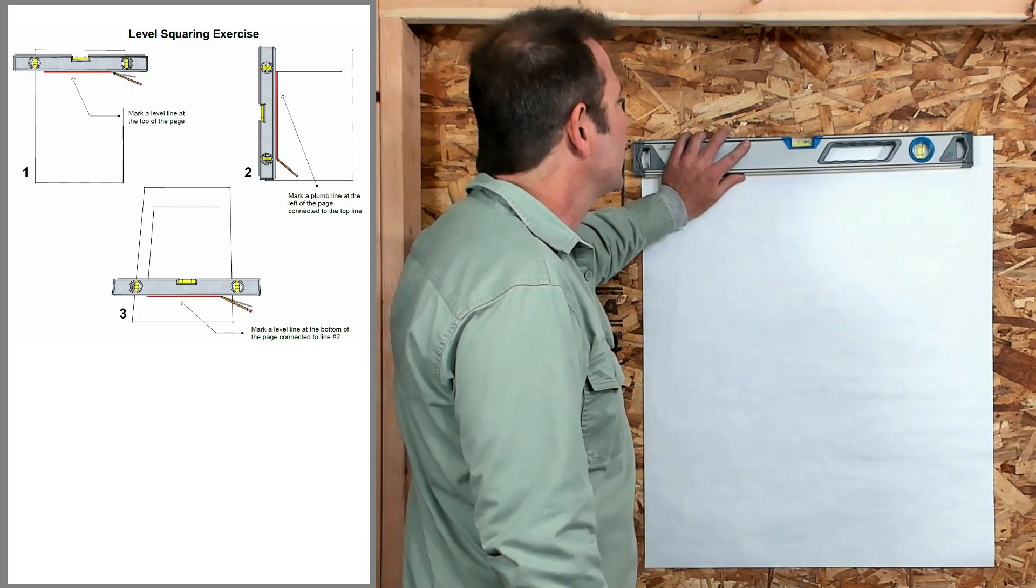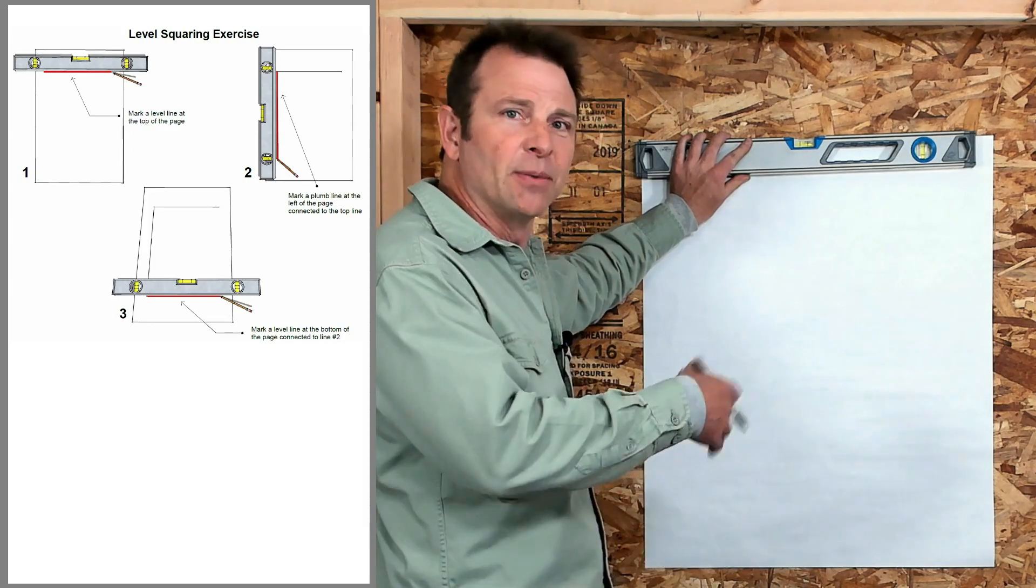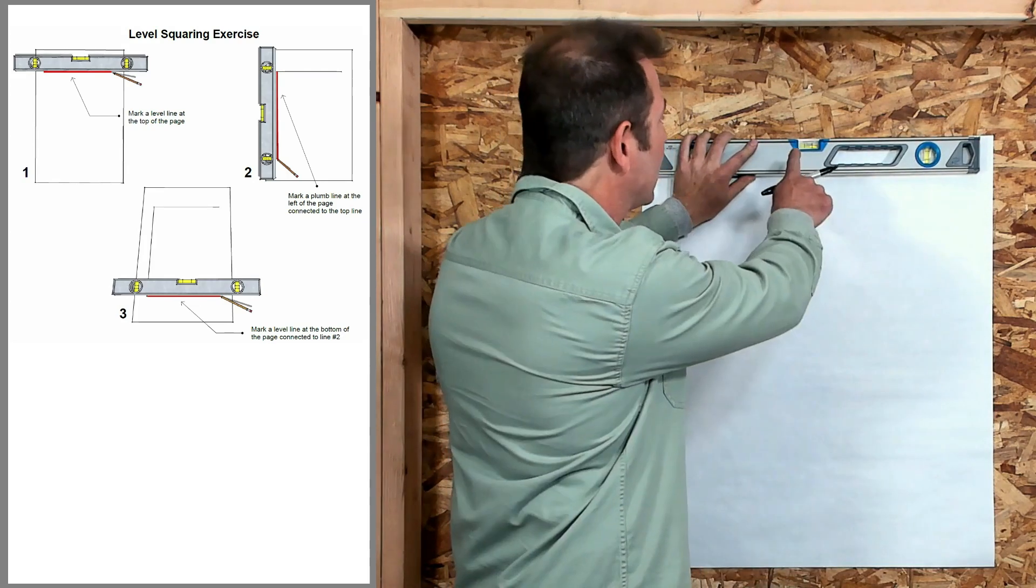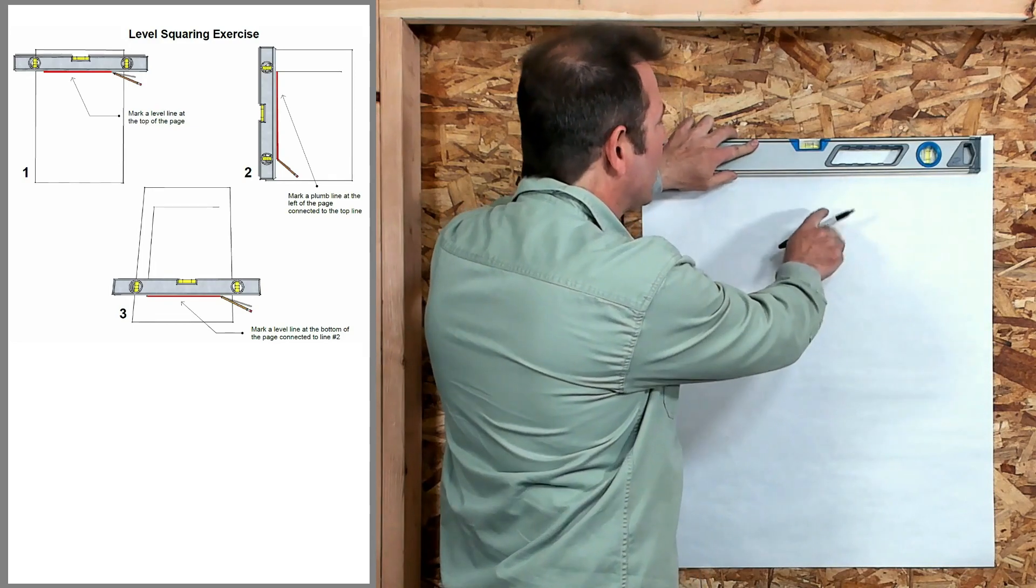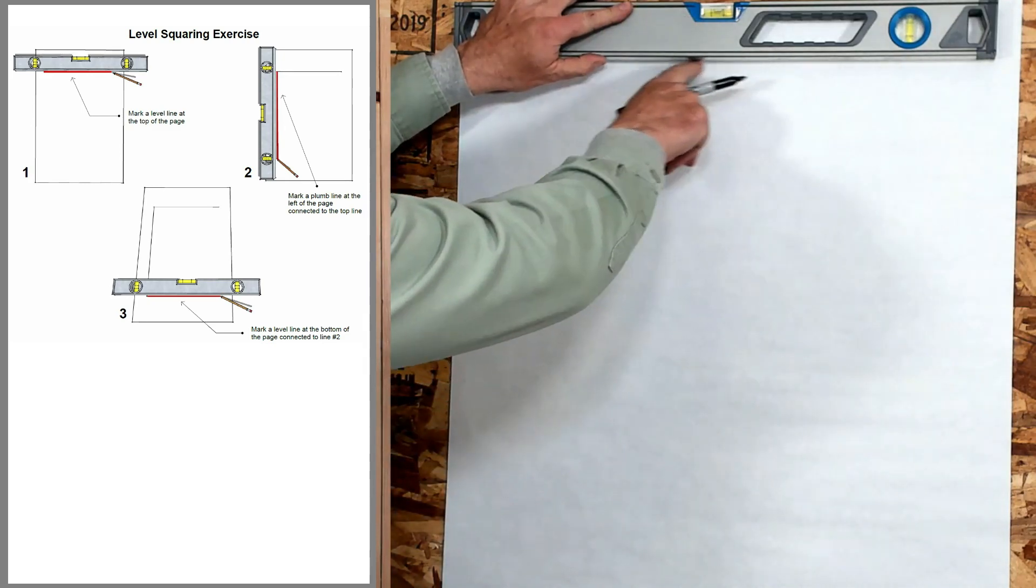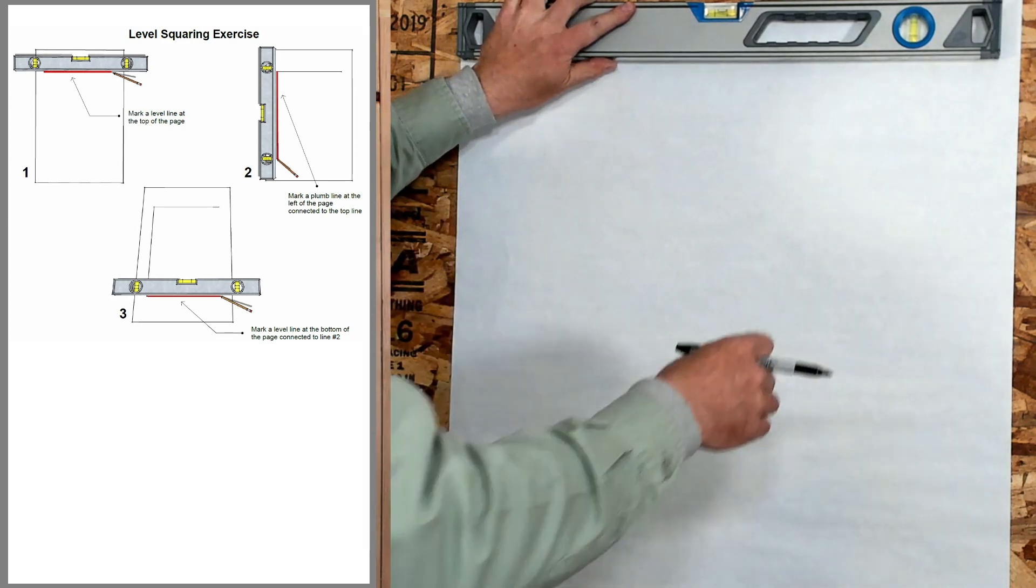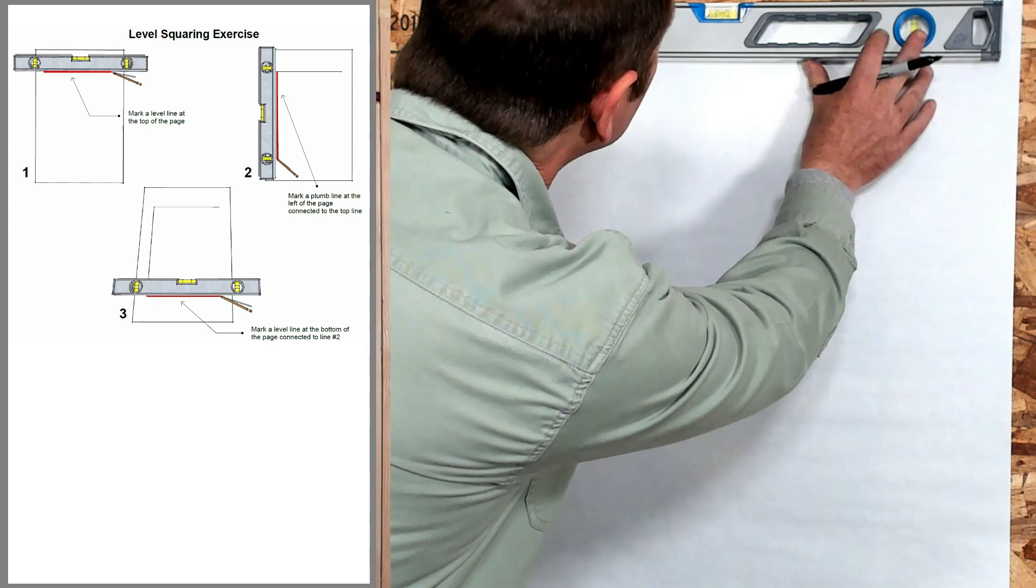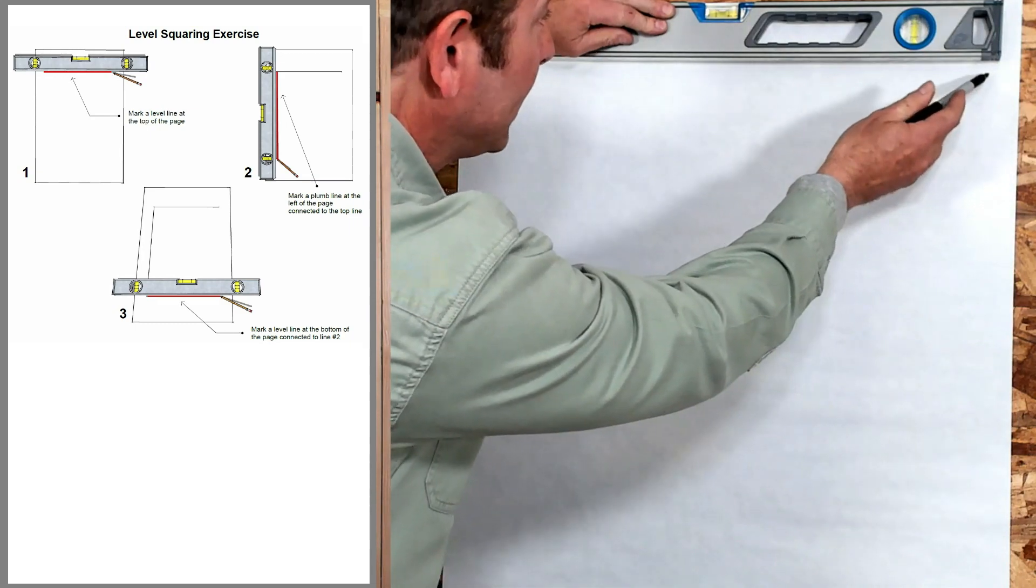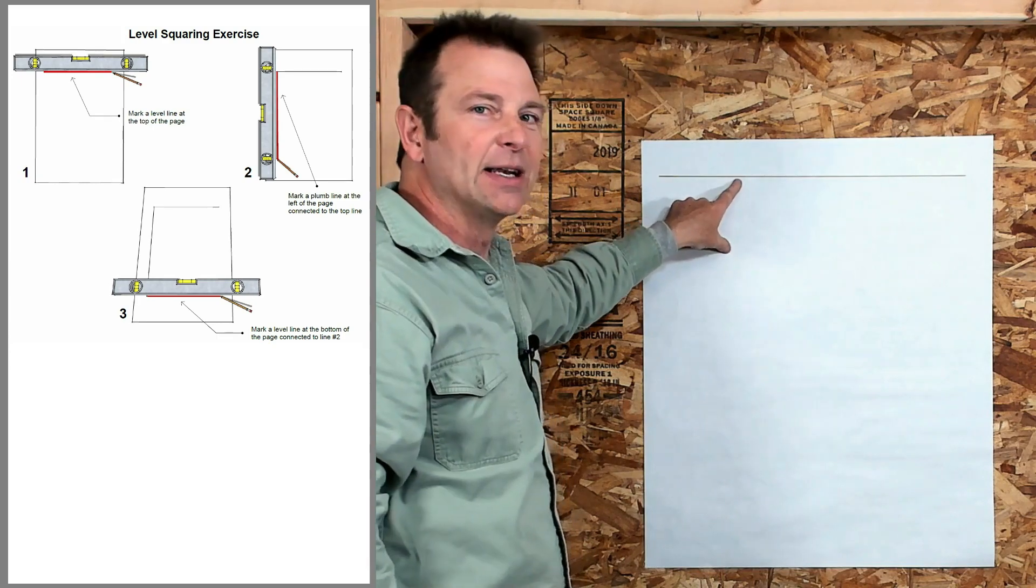I'll start with my top line, making sure it's near the edge of the page to maximize the size. You're going to lay your level up here and center that bubble to create a level line on the straight edge so we can mark a line. Keep in mind, some levels like this one only have a continuous straight edge on the bottom. I'm going to set my level, center my bubble as perfectly as I can, and draw that line. There is my first step done.